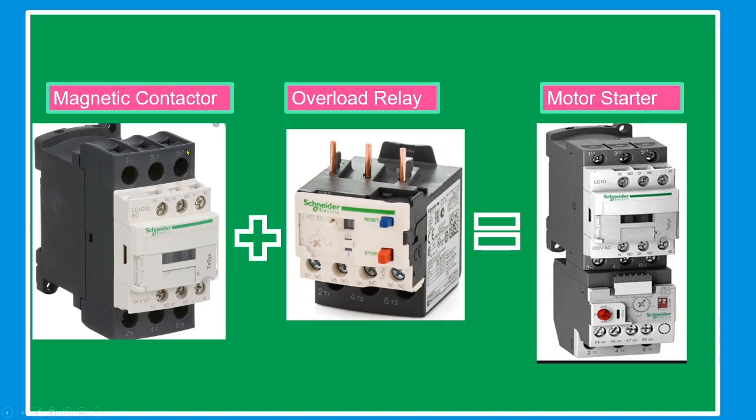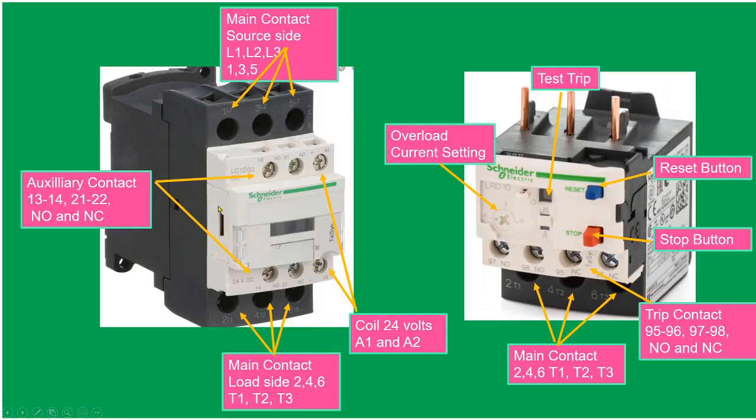Now this is the magnetic contactor. This is the overload relay, and this is the compact motor starter. This is the magnetic contactor: line one, line two, line three. The main contact source is line one, line two, line three, or one, three, five. On the other side, it's also main contact, but this one is the load side: two, four, six, or T1, T2, T3.